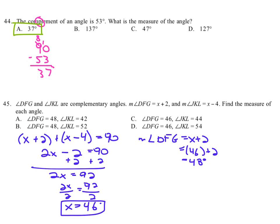And then let's do it for the measure of angle JKL. Equals X minus 4, and since we know that X is equal to 46, we get then 42 degrees for JKL.